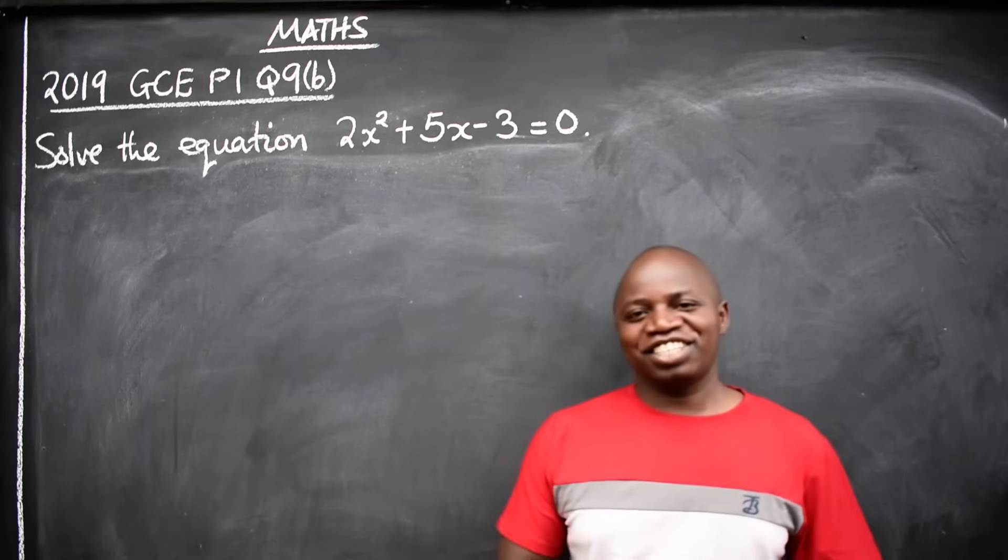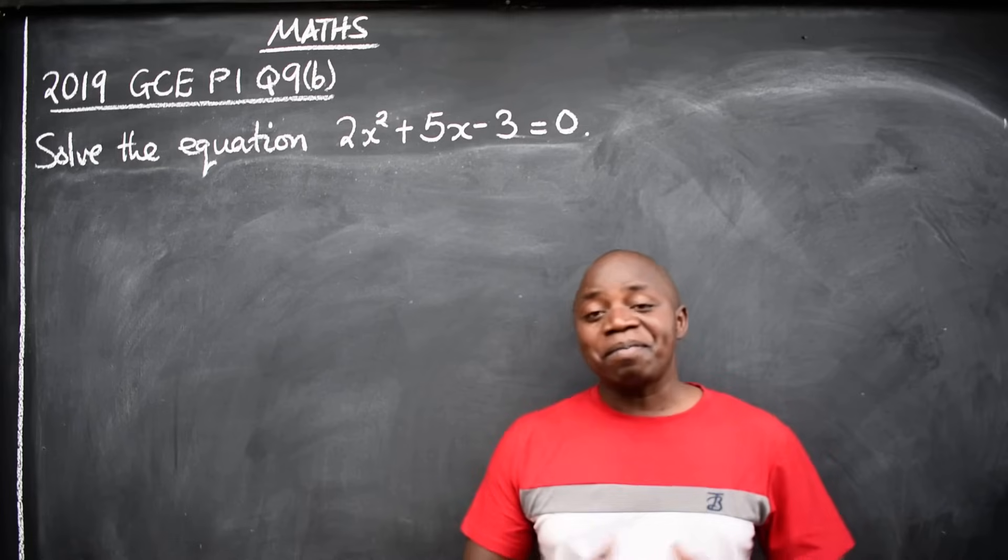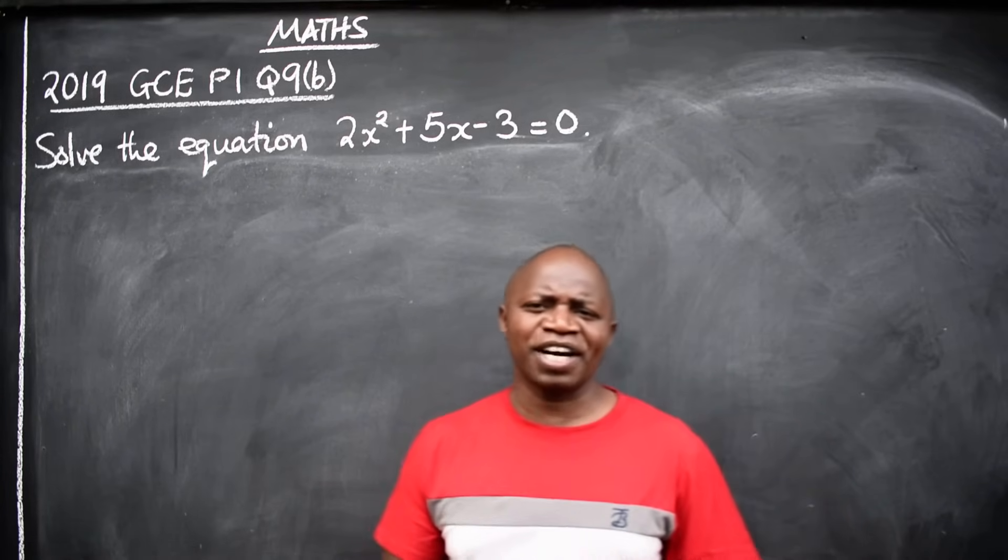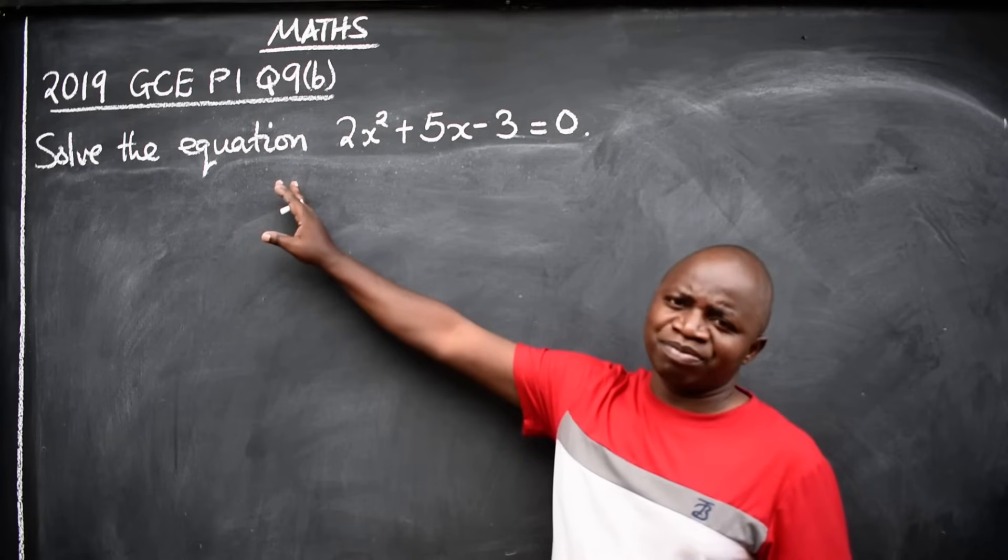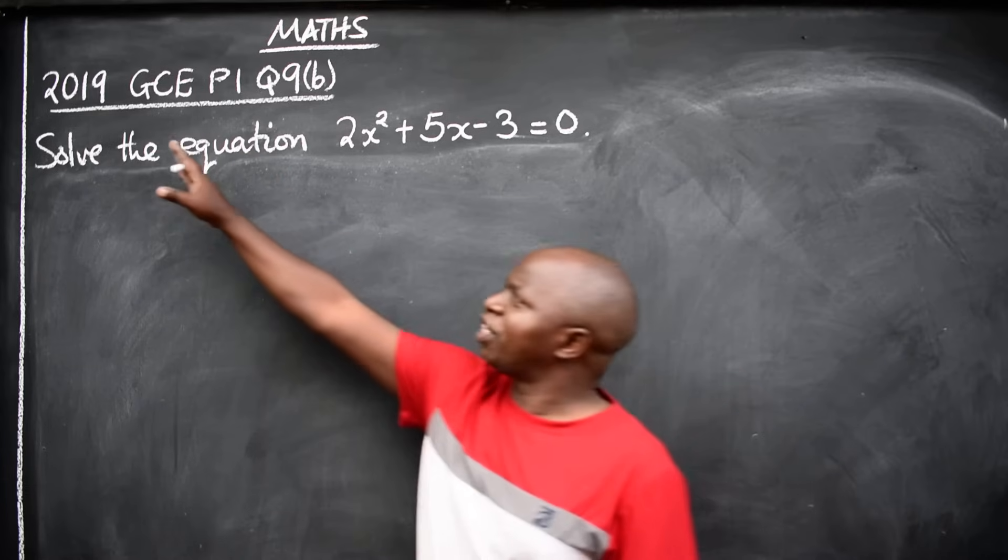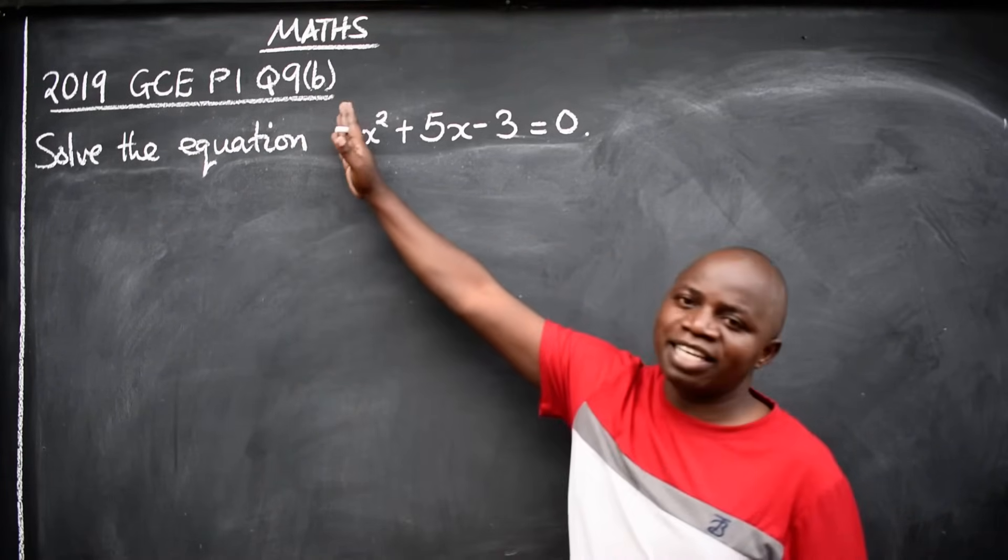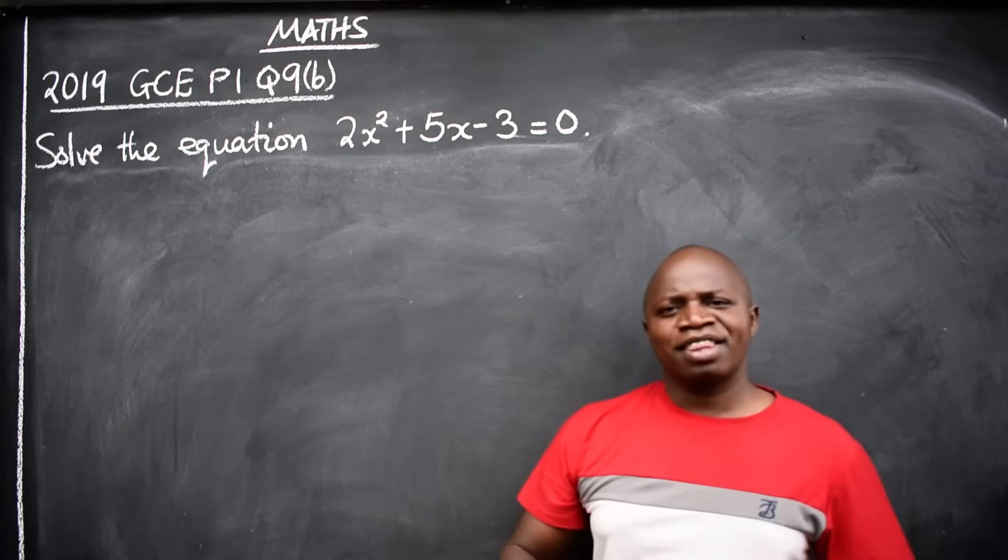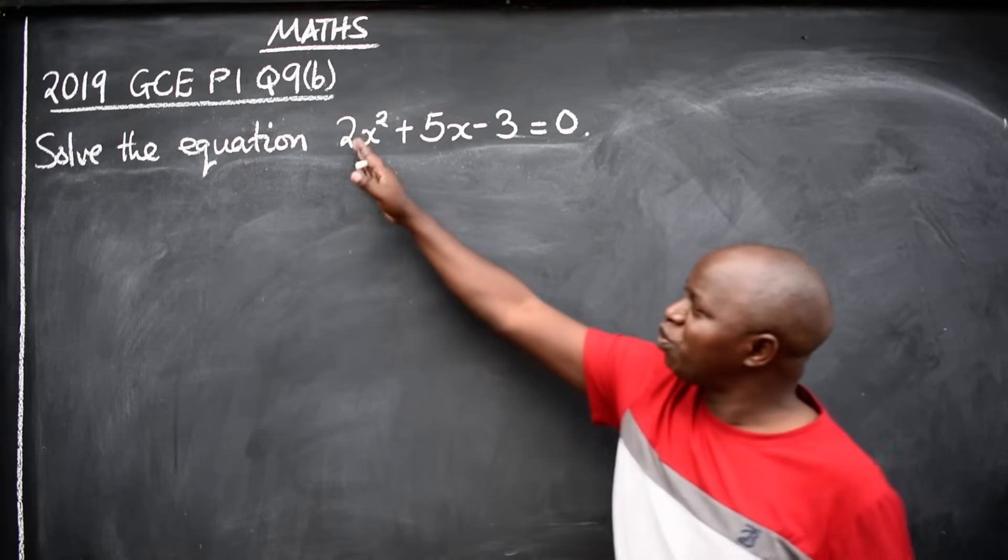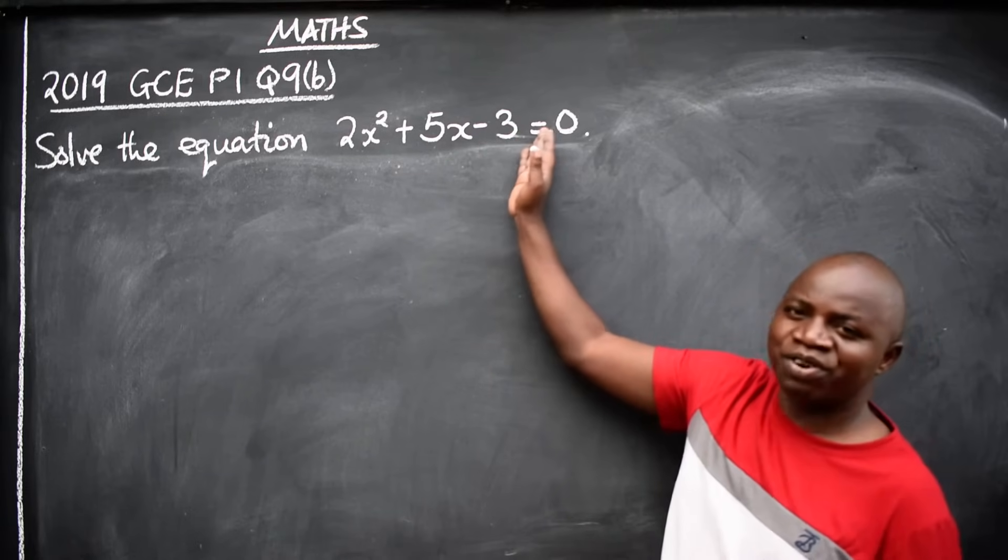Greetings ladies and gentlemen, hope you are doing well. This is mathematics and in this video we want to look at this question here on the board coming from 2019 General Certificate of Education, GCE, paper 1, question 9b. The question reads: solve the equation 2x² + 5x - 3 = 0.